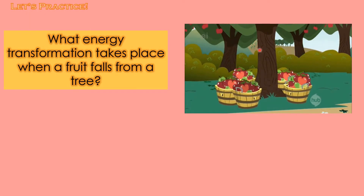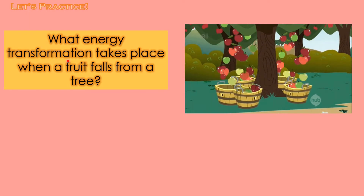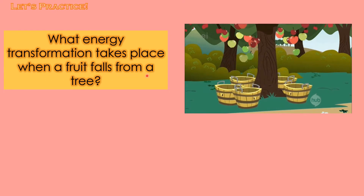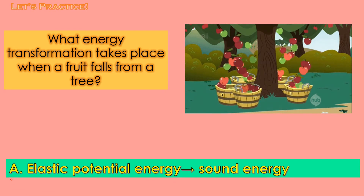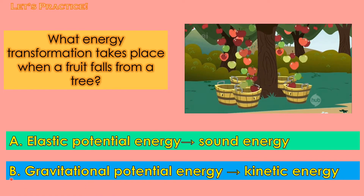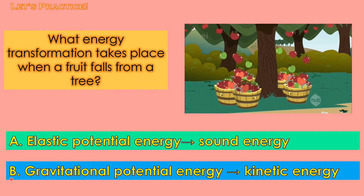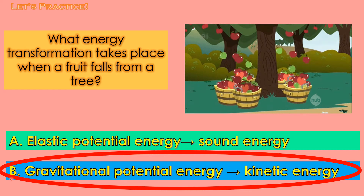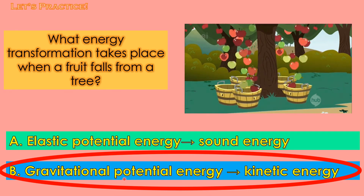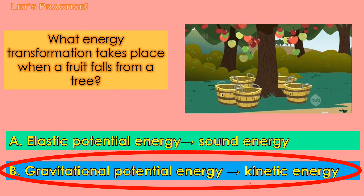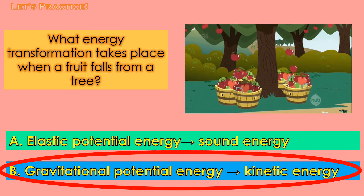Look at this clip. What energy transformation takes place when a fruit falls from a tree? Let's choose between letter A and letter B. One, two, three. Wow! Your answer is correct. From gravitational potential energy, it transforms to kinetic energy. Good job!